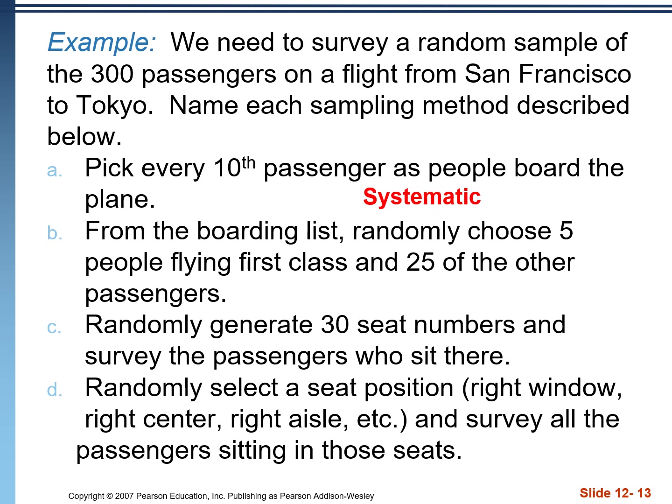Part B: from the boarding list, randomly choose five people flying first class and 25 other passengers. Notice that there are groups here — first class and other passengers. The question is whether these groups are the same or different. They're different, and we're not performing a census on either group. This is stratified sampling: we break them into groups and do a simple random sample on each.